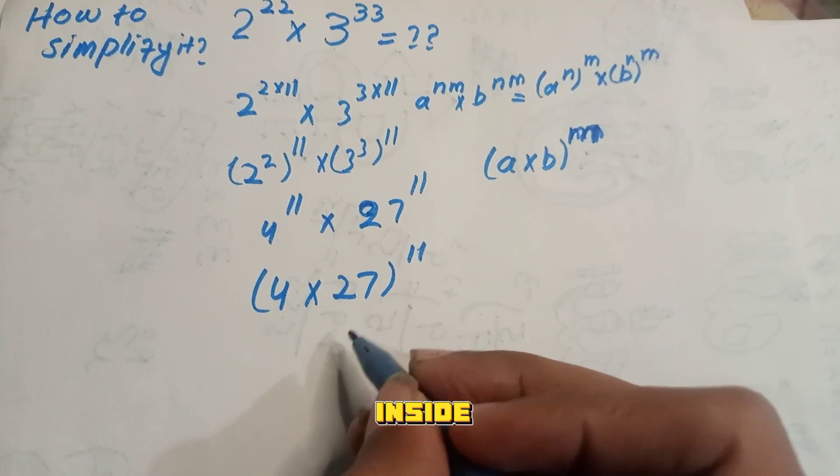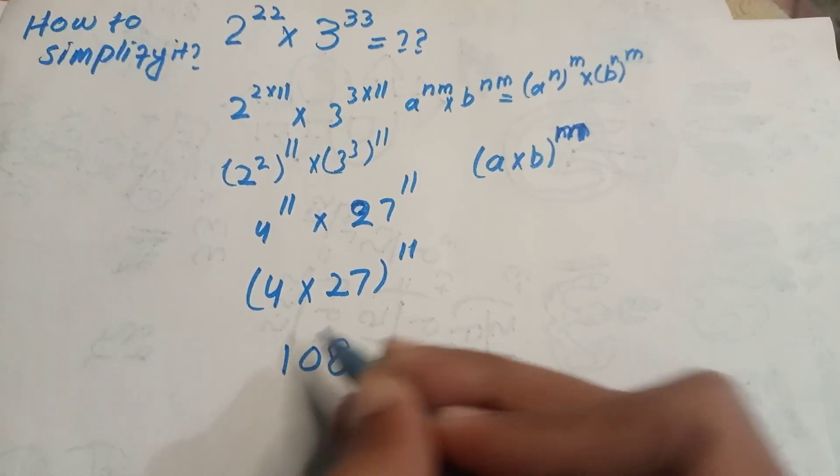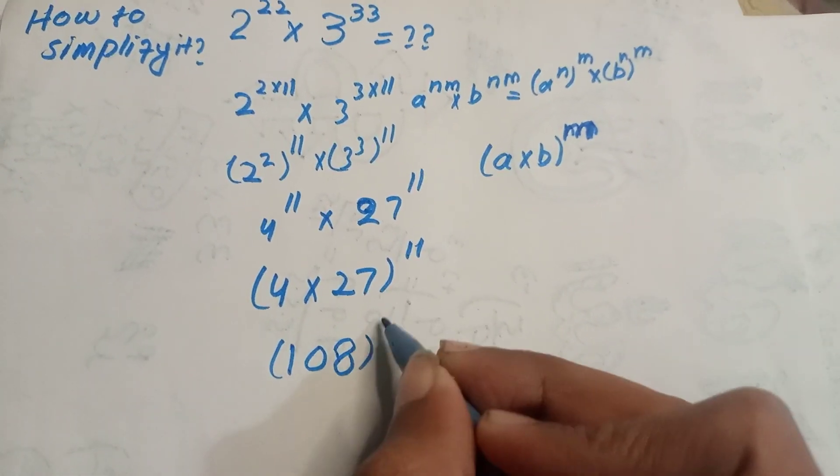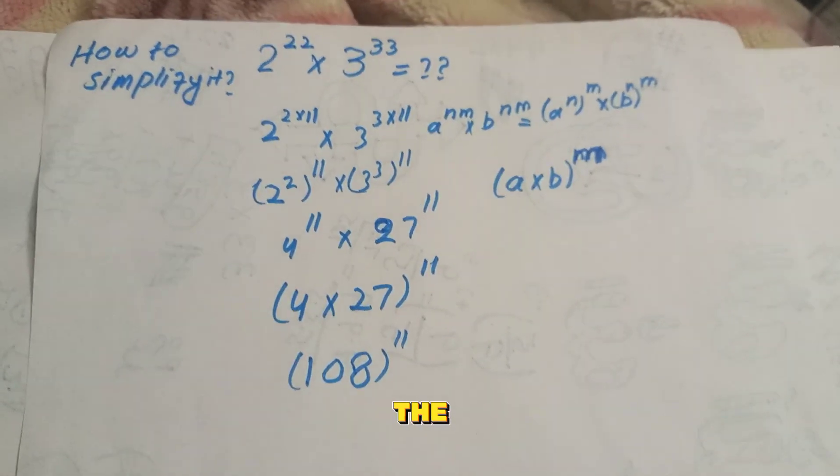When we multiply inside numbers, then we get 108^11. So this is the answer, the solution.